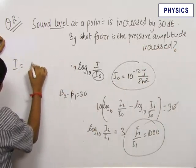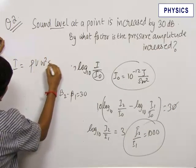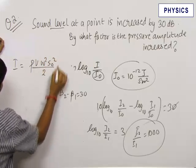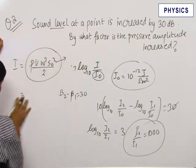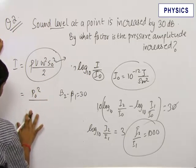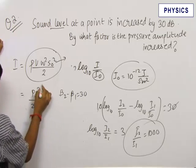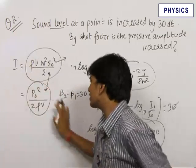The formula for intensity is ρvω²s₀²/2. This formula is in terms of displacement amplitude, and the formula in terms of pressure amplitude is P₀²/(2ρv).